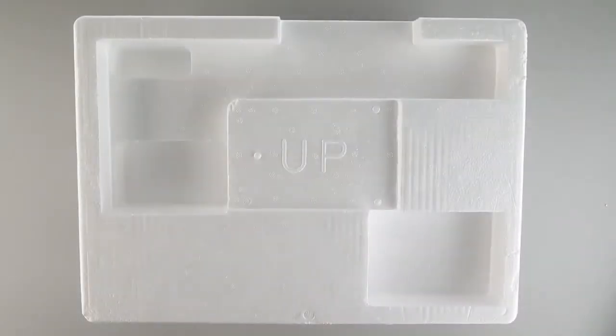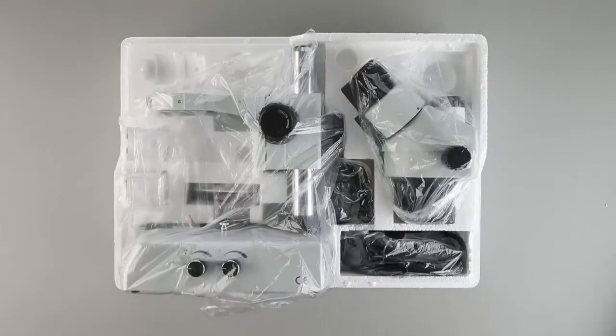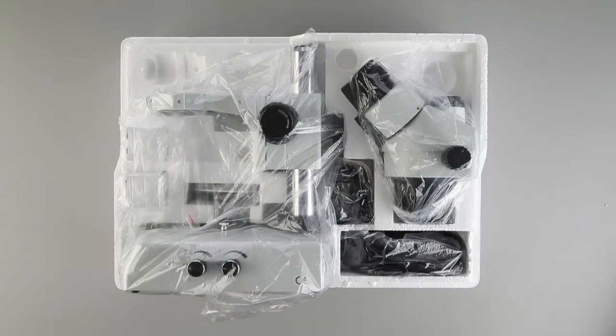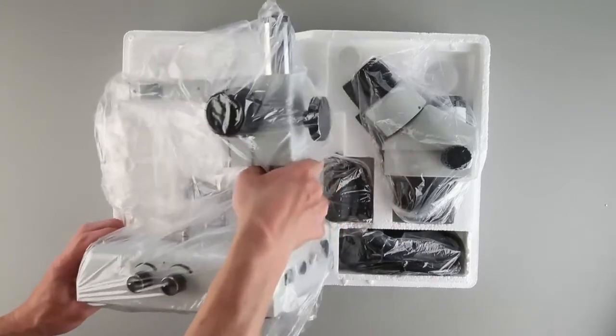When unpacking the microscope, look for the word up or an arrow which designates the top. Inside the box you'll find all the components you need for this microscope, which include the body, a head, a pair of eyepieces, a lighting module, a trinocular port, and various other accessories.